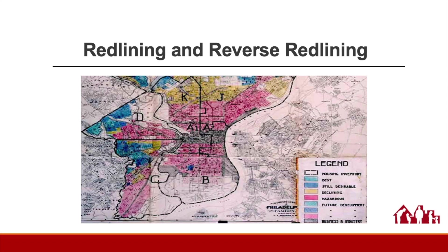The term redlining comes from maps that were created starting in the 1930s by entities like the Homeowners Loan Corporation — like this map here, which is a map of Philadelphia. These maps were created to tell banks which neighborhoods to lend to. The map divides the city into neighborhoods categorized as best, still desirable, declining, or hazardous. Hazardous — that's the red areas, hence the term redlining — tended to be typically where the brown and the black people lived.